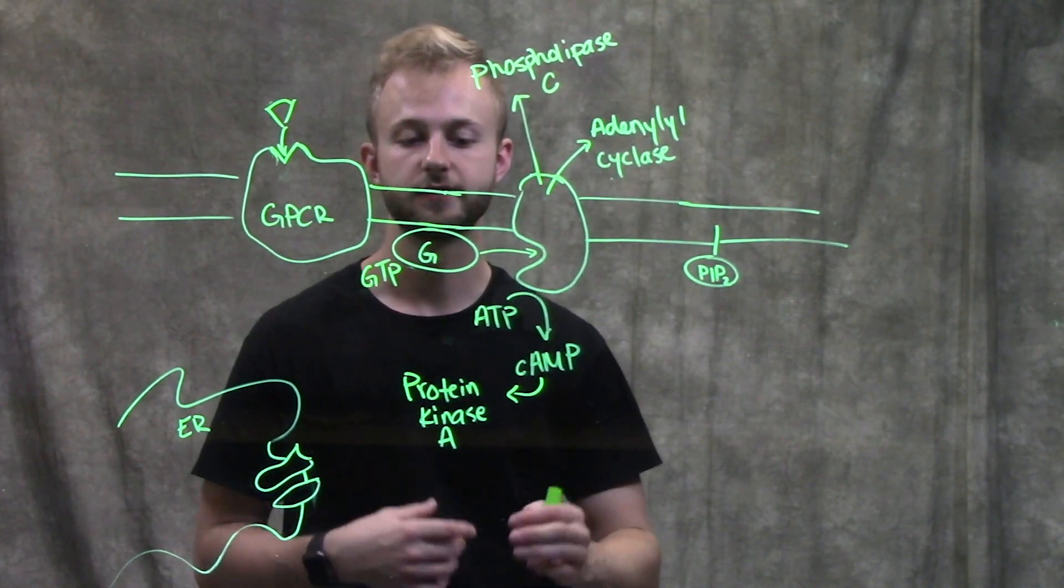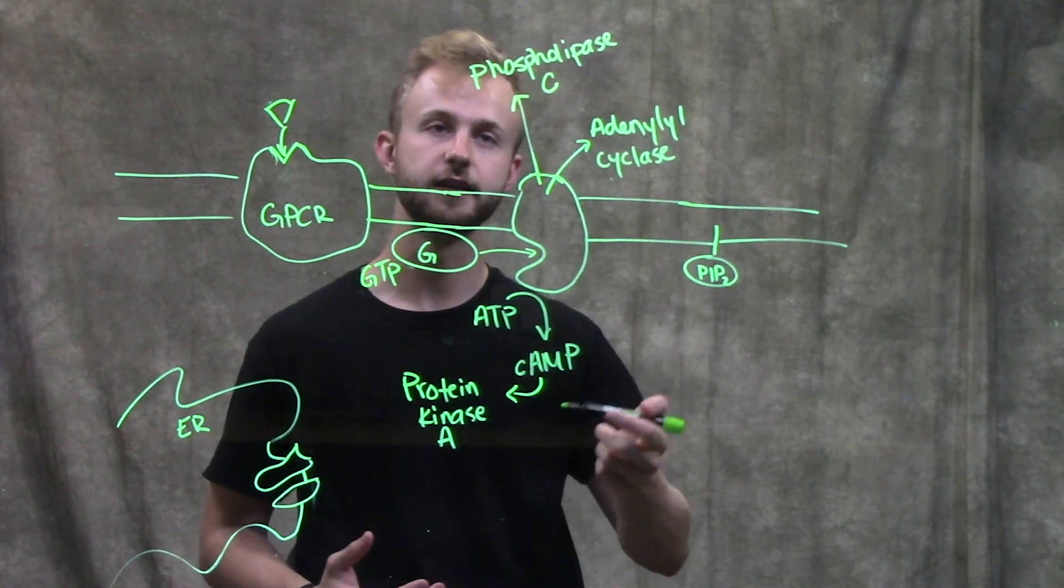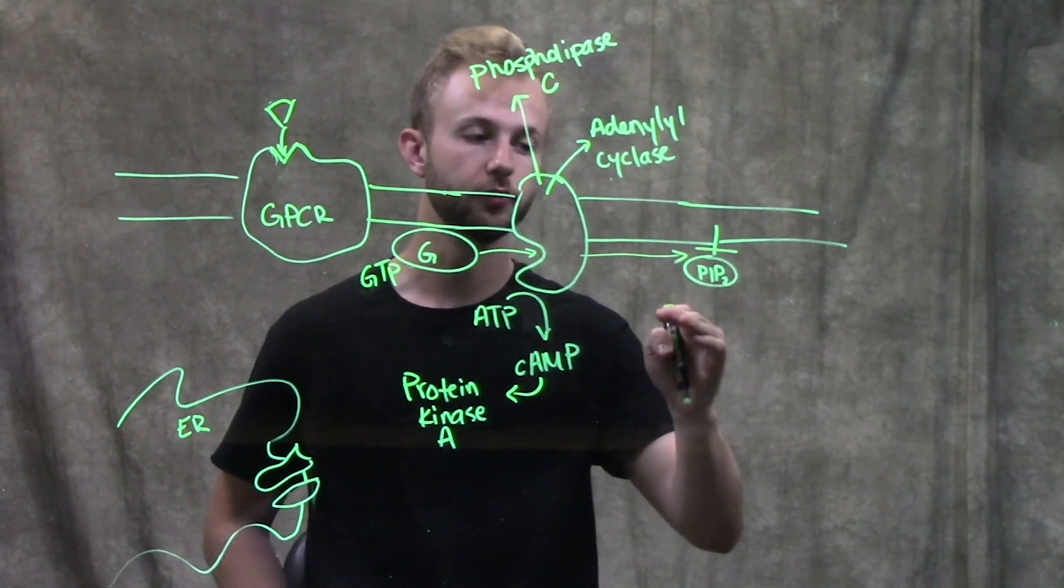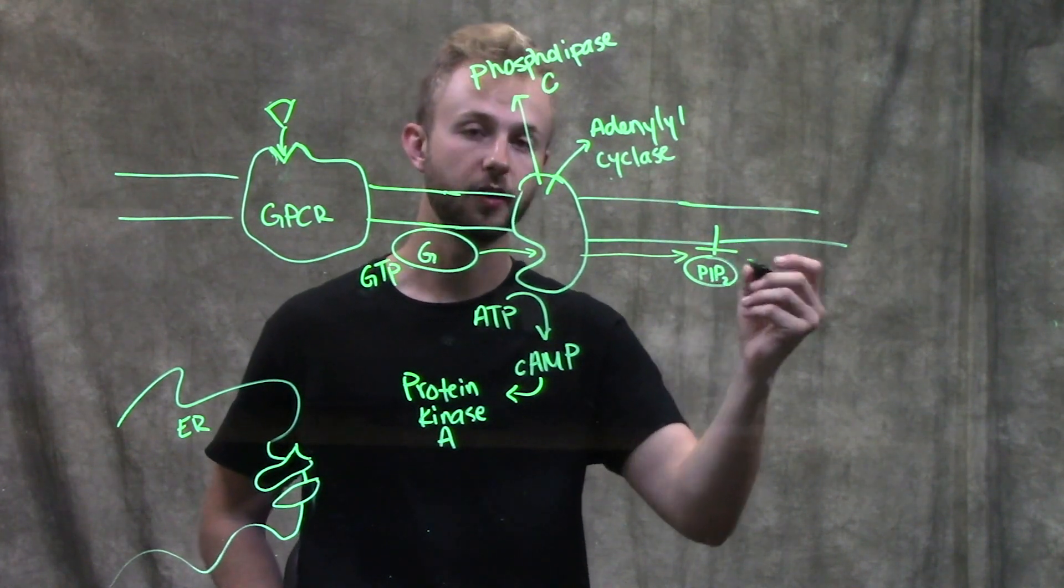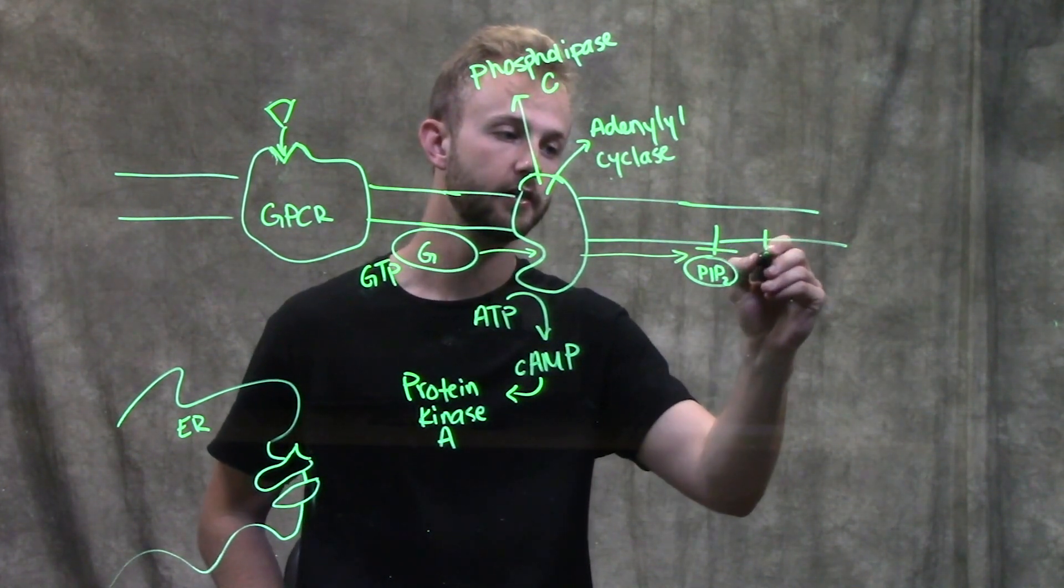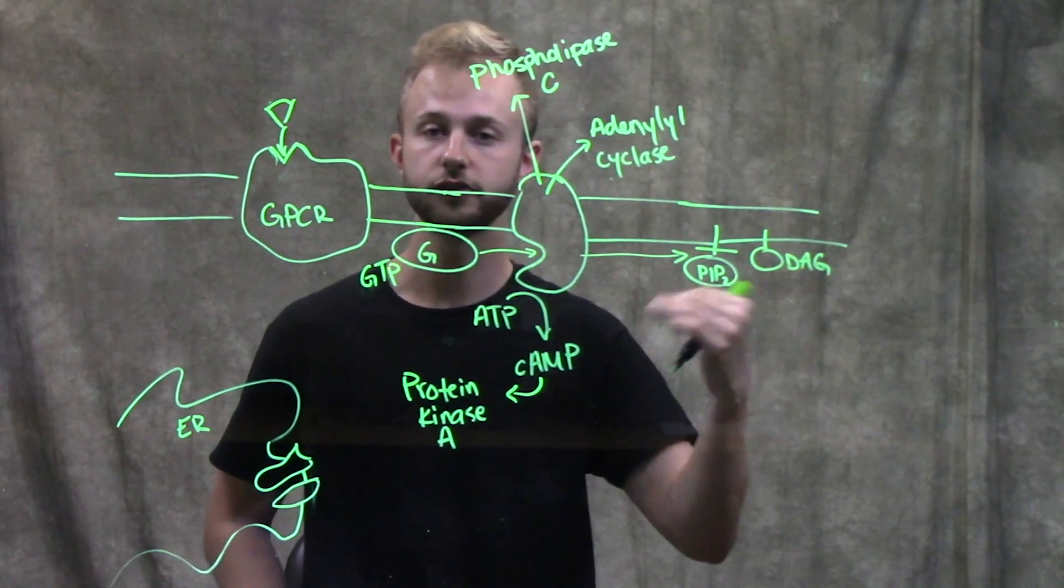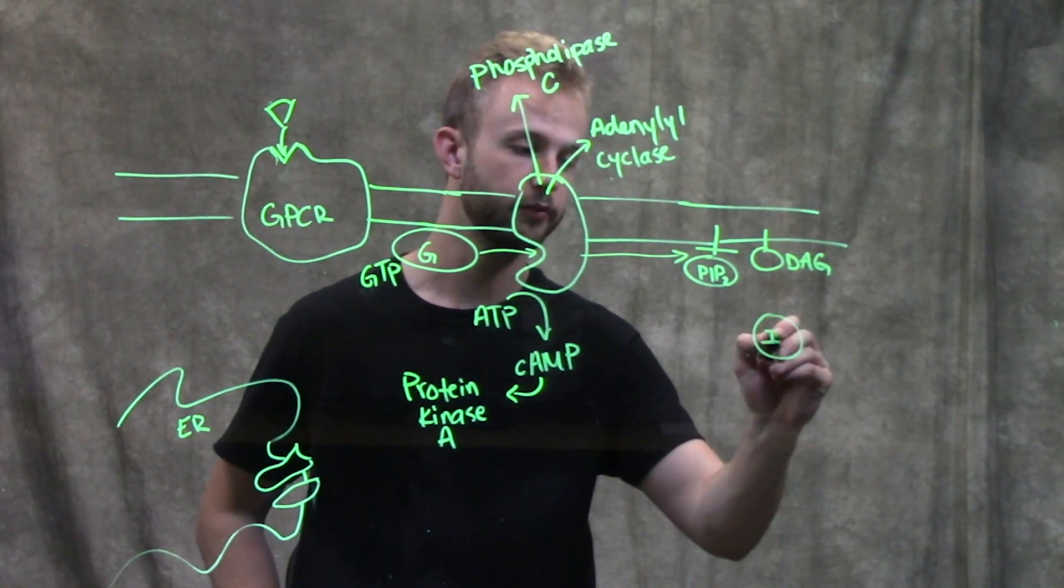Phospholipase C, instead of converting ATP to cyclic AMP like adenylyl cyclase did, is actually going to diffuse across the membrane and cleave a molecule that's called PIP2 into two molecules. One called DAG that will stay in the membrane and can also play a role in signaling, and then one called IP3.